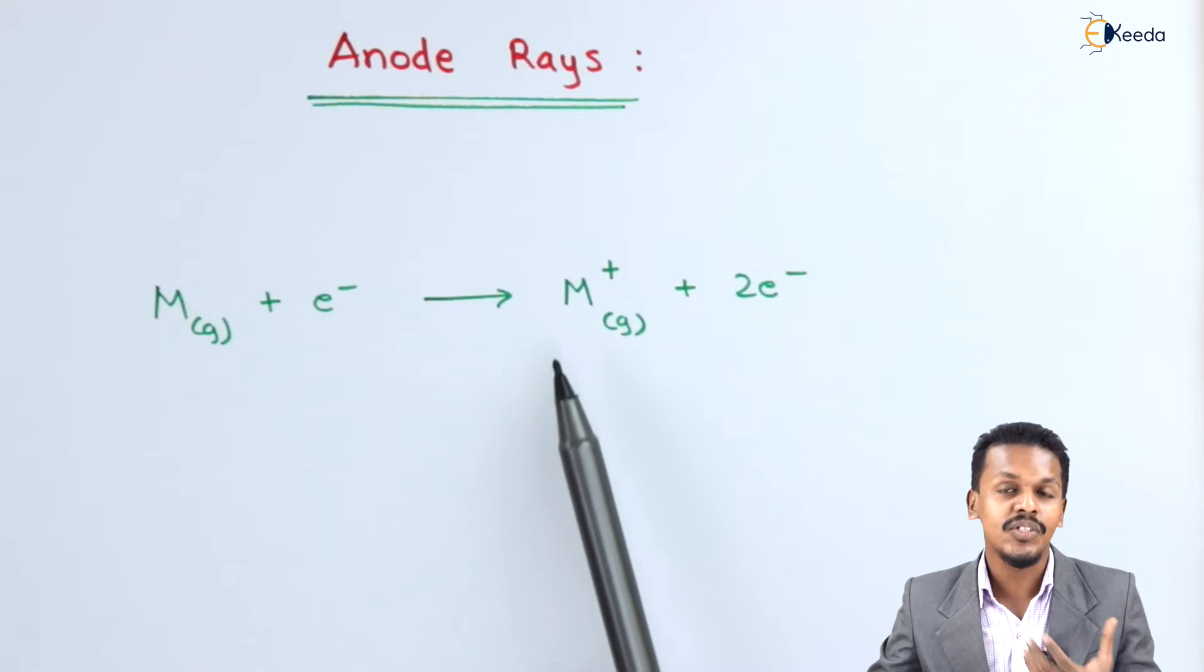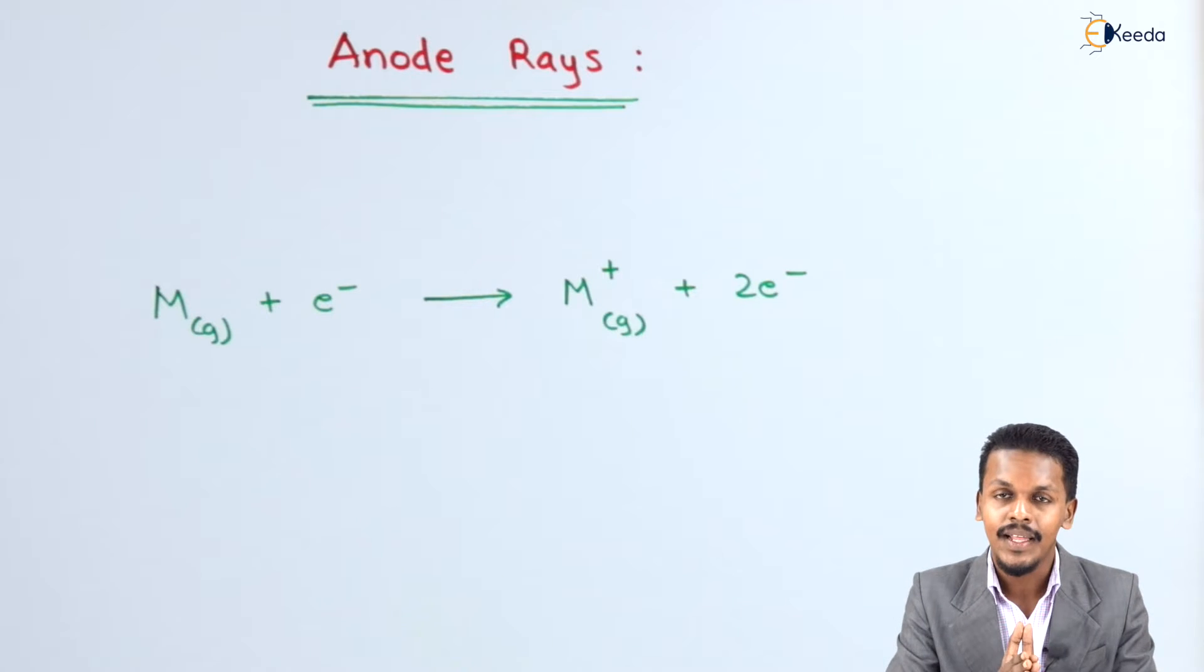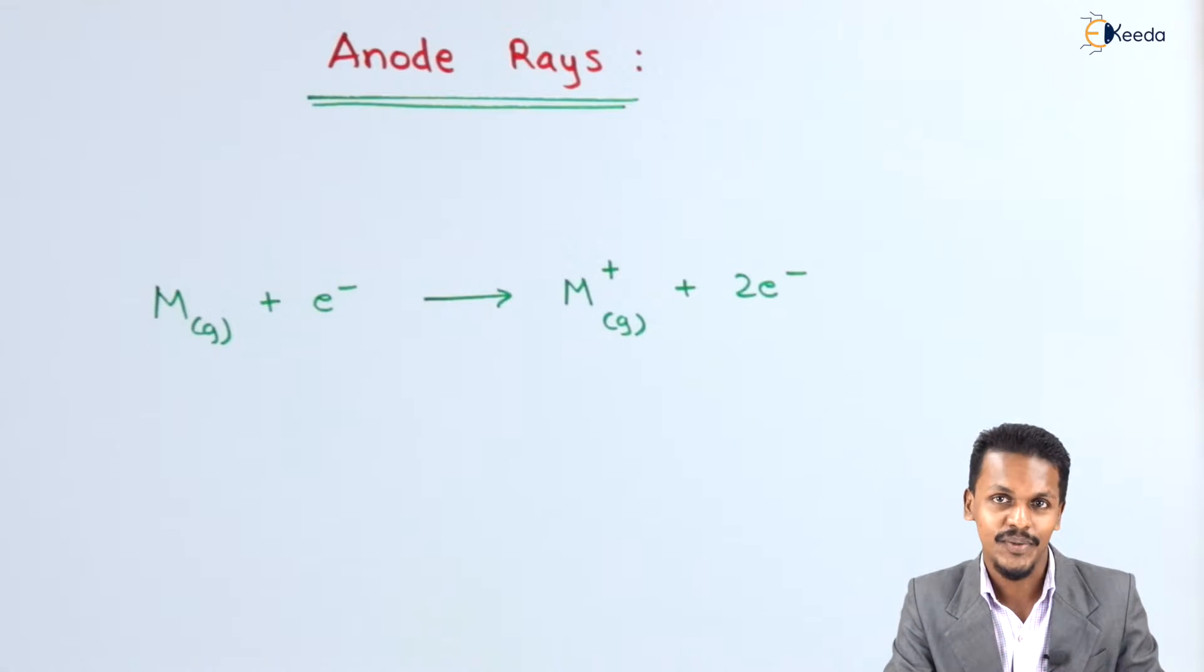So that is the reason we are going to talk about the positive particle, and that is nothing but the anode rays. Let us understand with the help of a particular diagram how the anode rays are being produced.